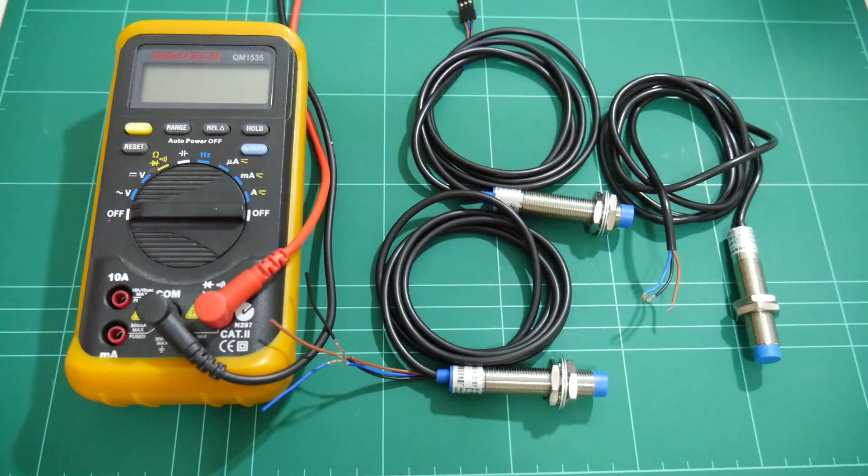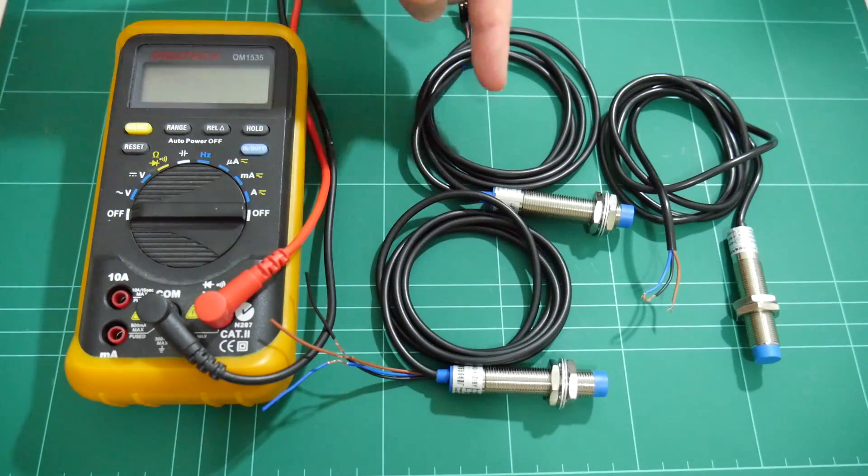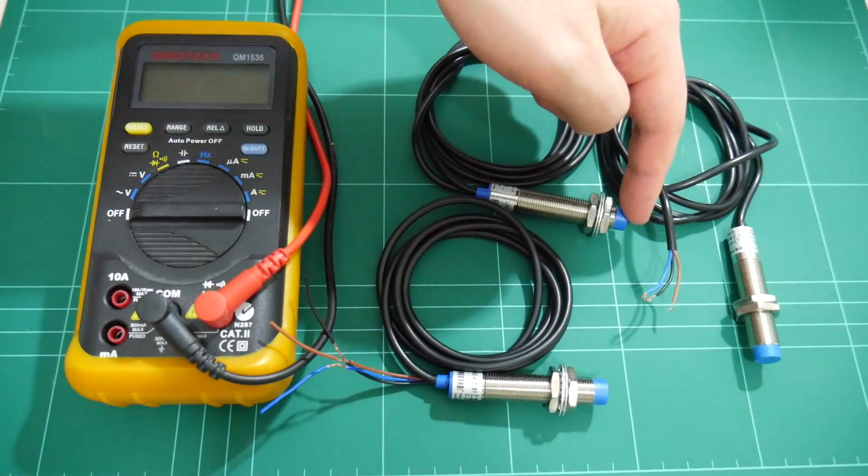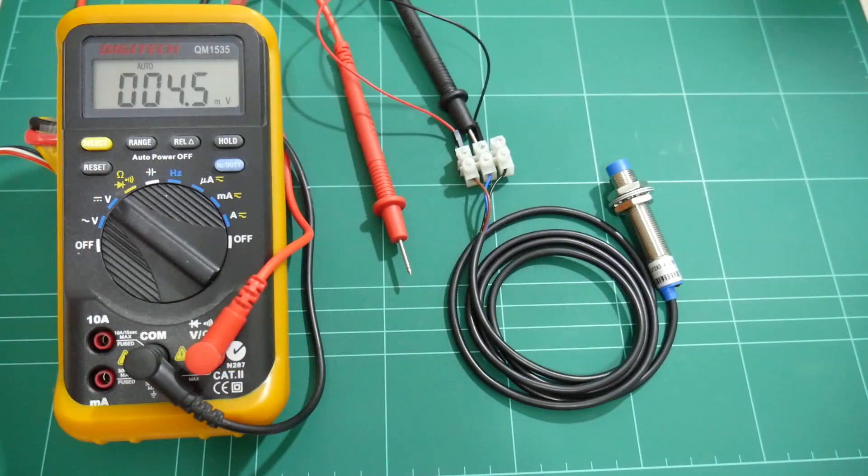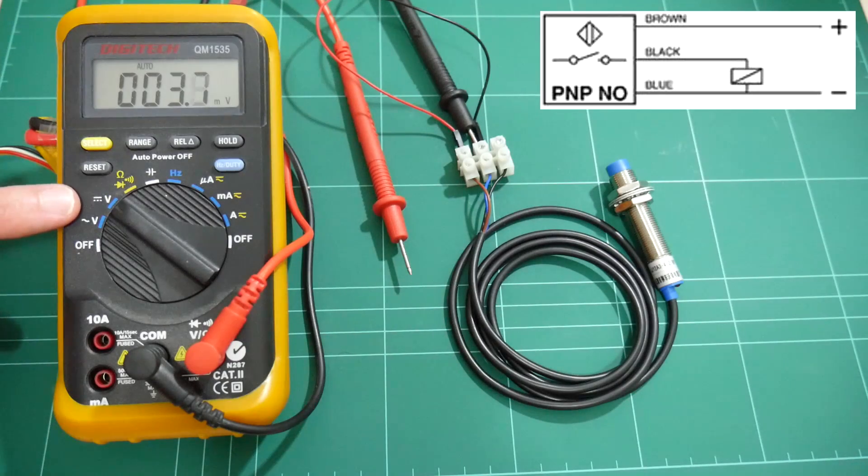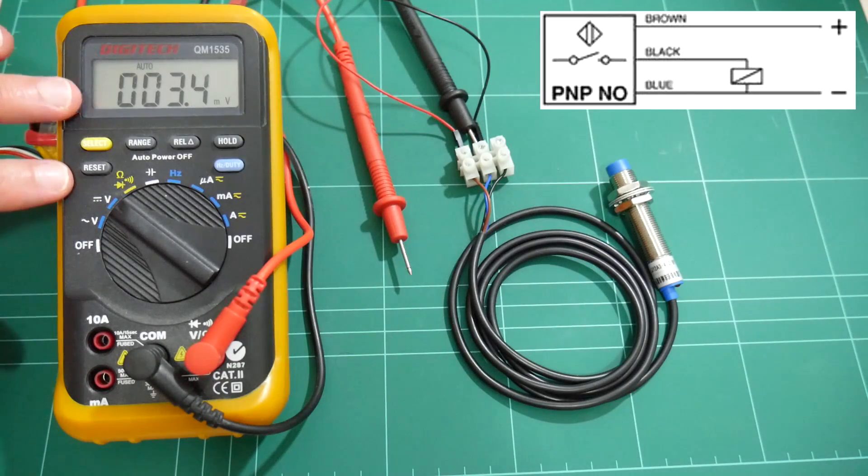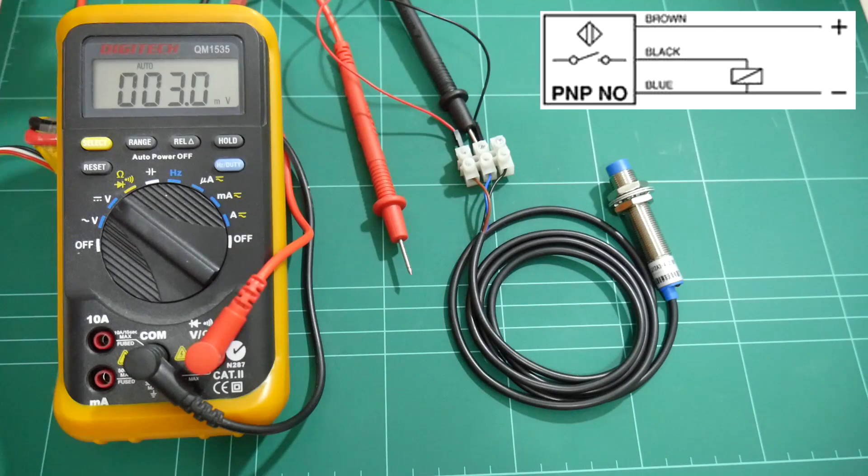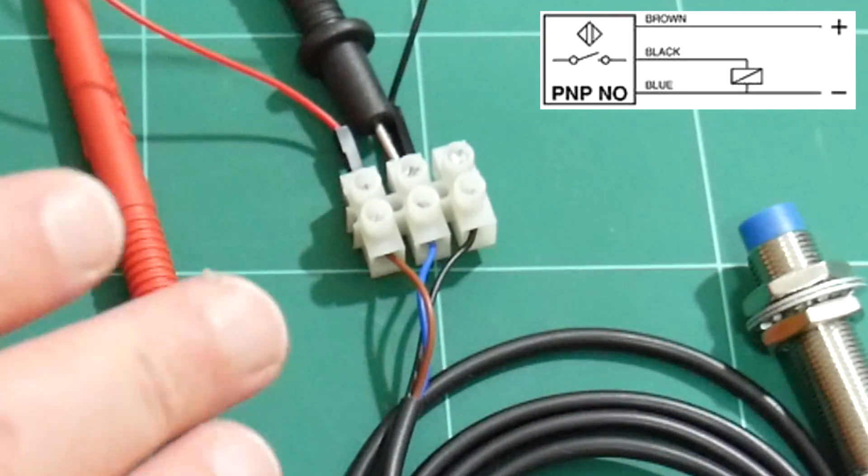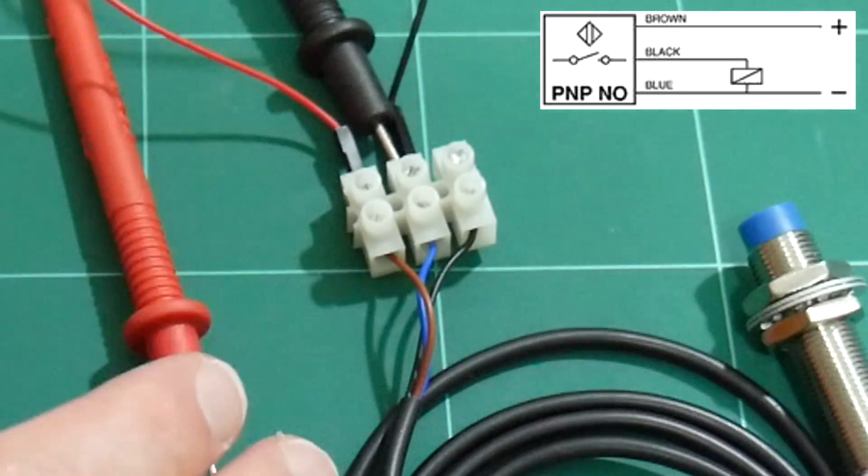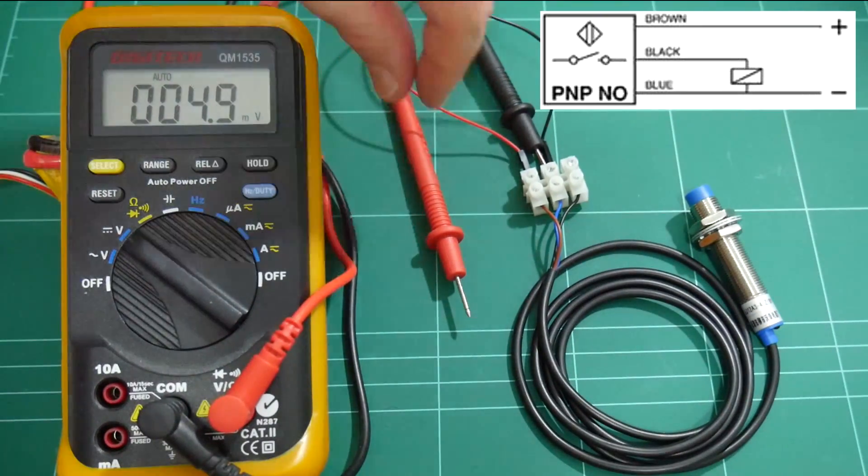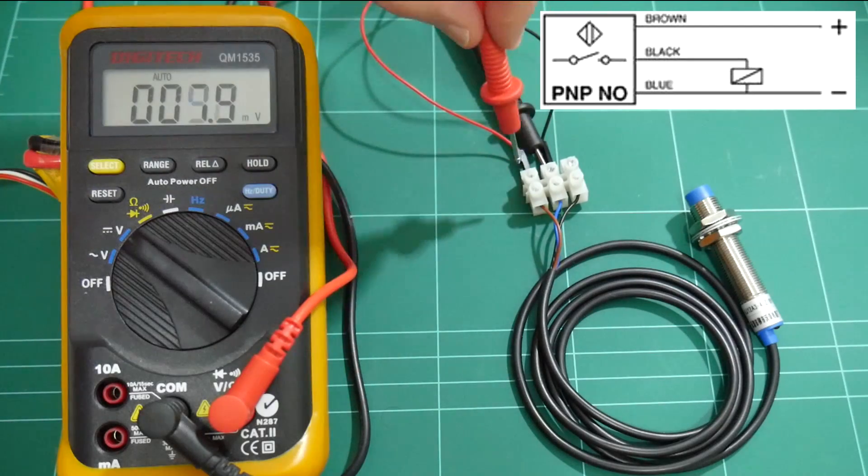But let's take a deeper look. Let's probe, no pun intended, these probes using the multimeter, and see what the sense wire is telling us when there is metal detected on the probe. Here we have the PNP probe, hooked up directly to 5 volts. I have the multimeter set to voltage DC on the automatic range. I have the brown wire hooked up to the positive supply, the blue wire hooked up to the negative, and our sense wire is actually this black wire here coming out of the probe.